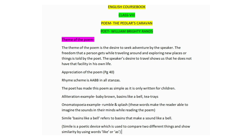Now students, in your course book on page number 40, there is a section called Appreciation of the Poem. I am giving you some notes today which will be helpful while designing your own answers and writing in the fair registers. Rhyme scheme is AABB in all the stanzas. The poet has made this poem as simple as it is, as it is only written for children. Alliteration examples: baby brown, basins like a bell, tea trays. Onomatopoeia example: rumble and splash. These words make the reader able to imagine the sounds in their minds while reading the poem.